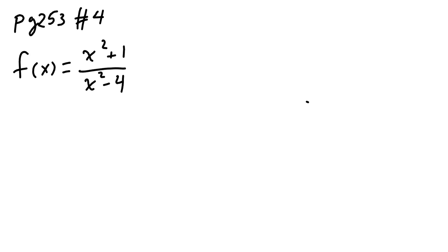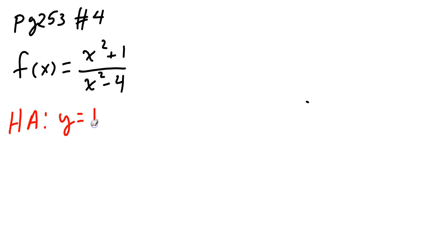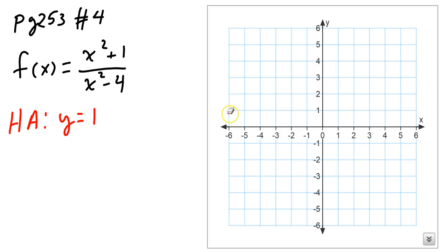I know this is a rational function, so the first thing I always identify are my horizontal asymptotes. Because this is equal degree, I know I have a horizontal asymptote at y equals — because it's equal degree, isn't it just the ratio of my coefficients — so y equals 1. On a graph, I'll go ahead and put that horizontal asymptote in. At y equals 1, I draw this horizontal line.